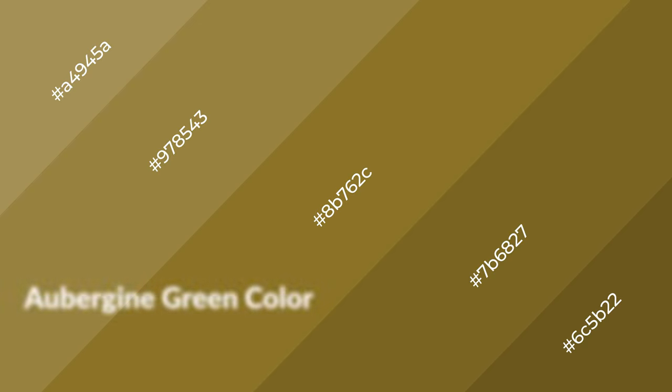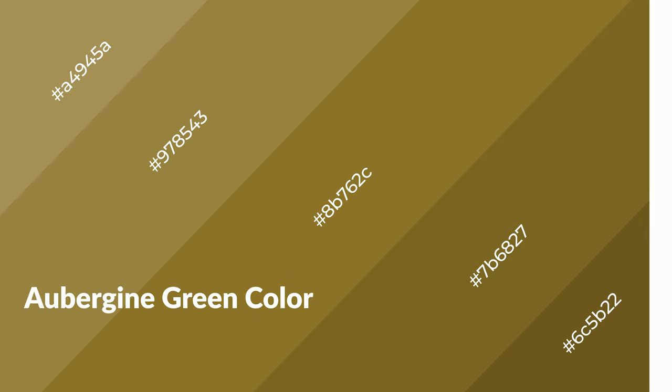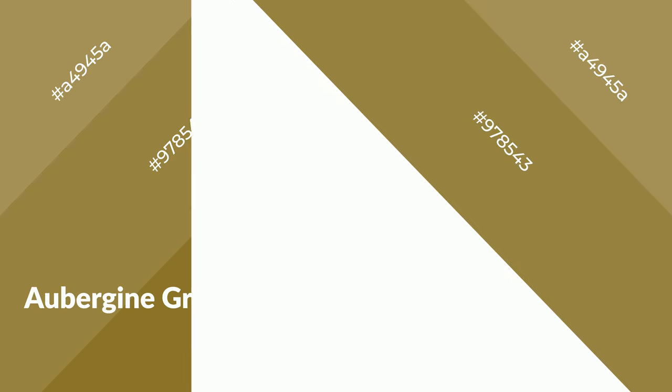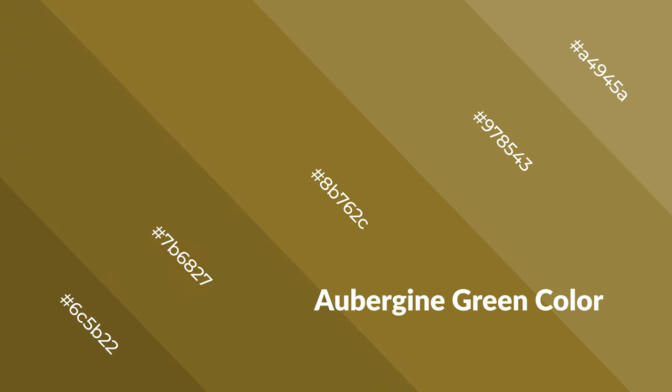Aubergine green is a warm color and it emits cozier and active emotions. Warm colors are symbols of warmth, fire, heat, and sunshine. It also evokes joy, passion, love, and even anger. You can see them used in restaurants and gyms.